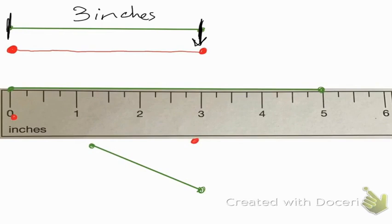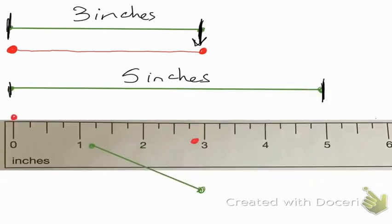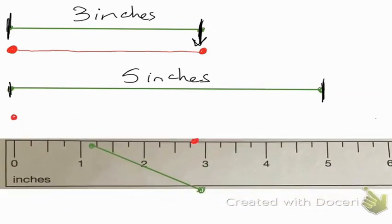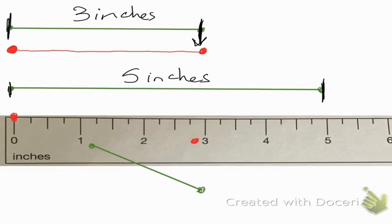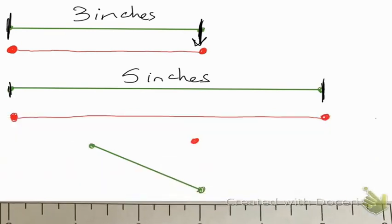Next I'm going to measure this second line segment. Starting at the zero, I notice that the line stops at the five, so this line segment is five inches. These two line segments we just drew are horizontal lines. We've gone over horizontal, vertical, and oblique or diagonal. Starting at zero going all the way to the five, I get my five-inch congruent line segment — same length, same size as the one I just measured.